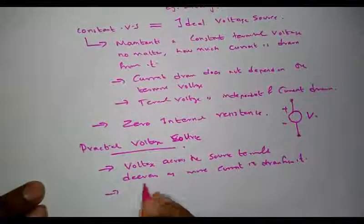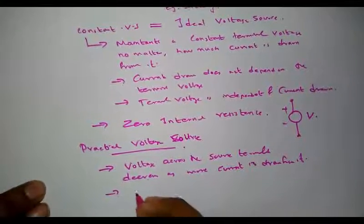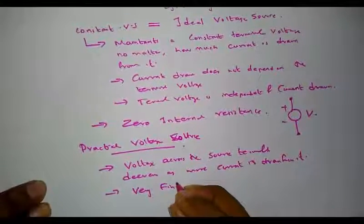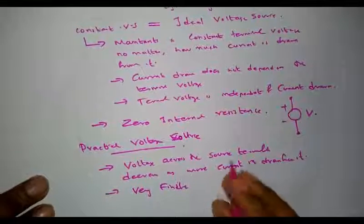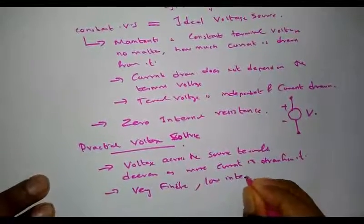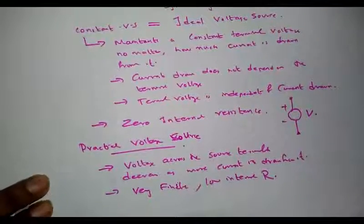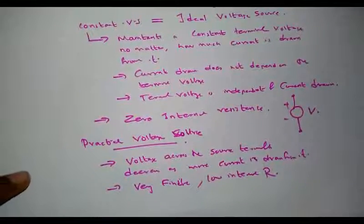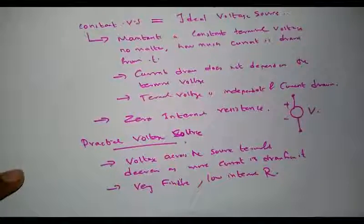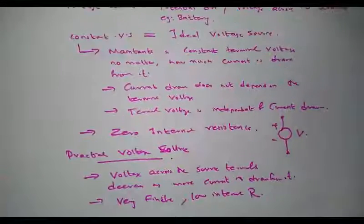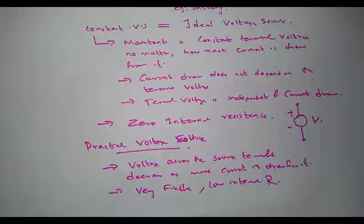A practical voltage source is considered to have a finite, low internal resistance. Practically, the voltage across the source will decrease as the current drawn from it increases.